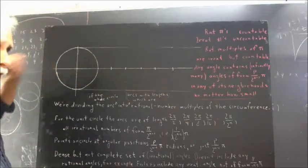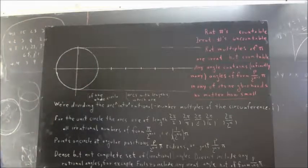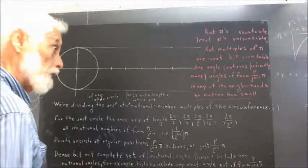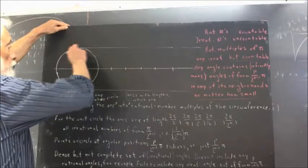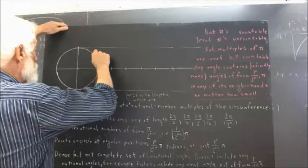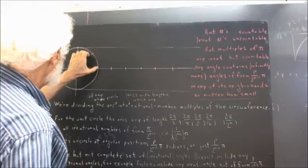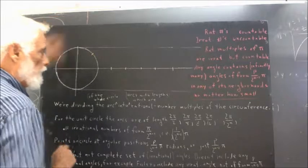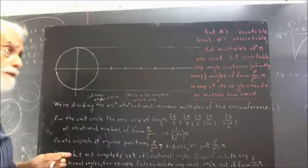We've already got the circle divided into four equal arcs. Now we want to divide each of these arcs into two equal arcs, which is easily done by geometric construction. Everything we're doing here can be done with compass and straight edge — at least theoretically. So we first divide this arc into two, and we're going to get something about here.